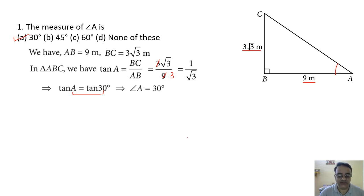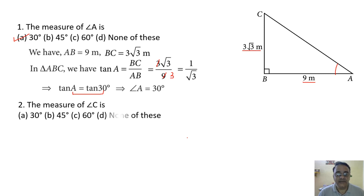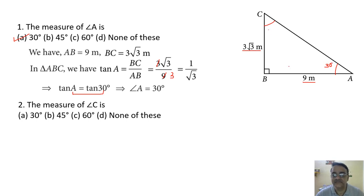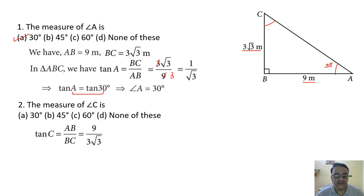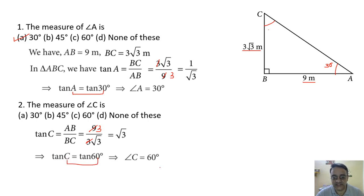Question 2: Find angle C. tan C = AB/BC = 9/3√3 = √3. Since tan 60° = √3, angle C = 60 degrees.